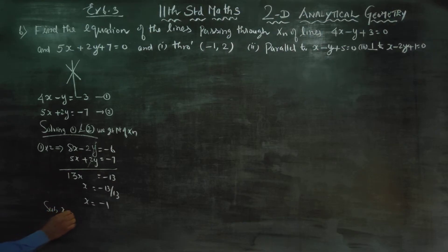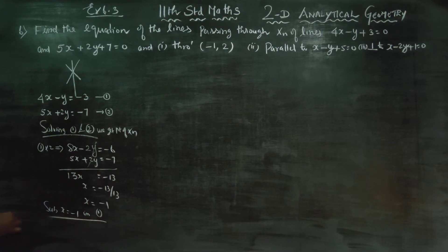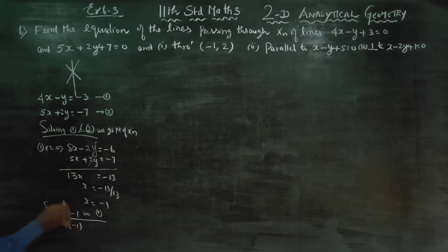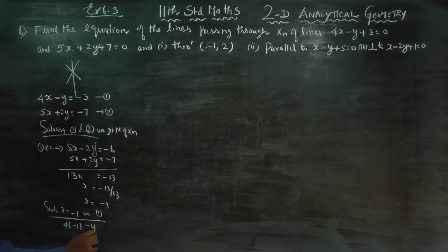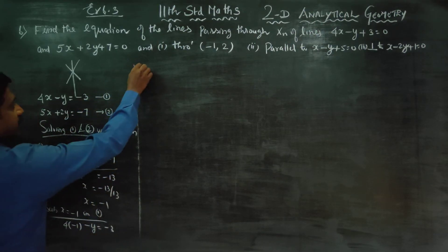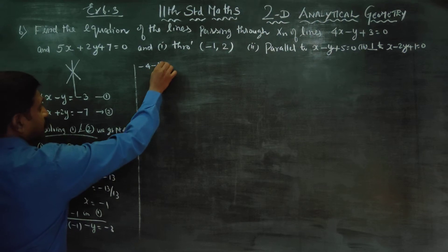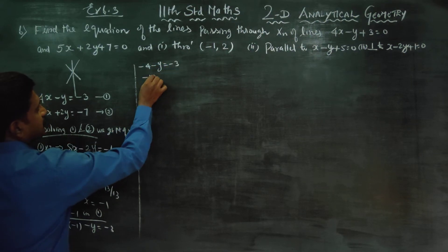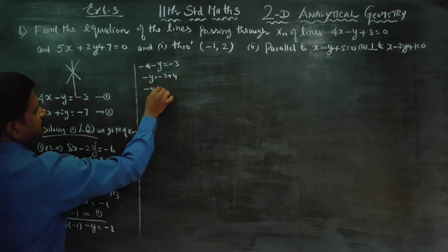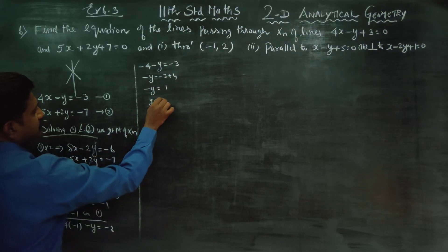Substitute x equals minus 1 in equation number 1: 4 into minus 1 minus y is equal to minus 3. Then minus 4 minus y equals minus 3, so minus y equals minus 3 plus 4, minus y equals 1, therefore y equals minus 1.